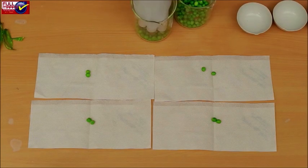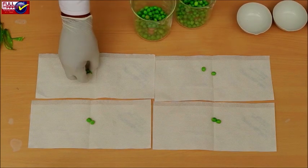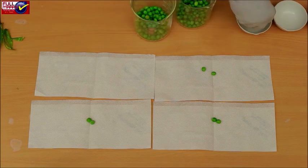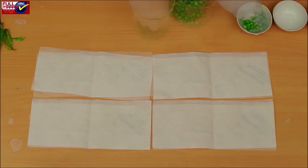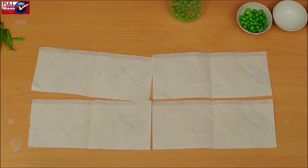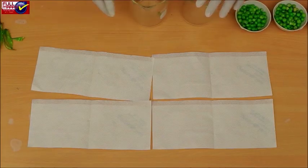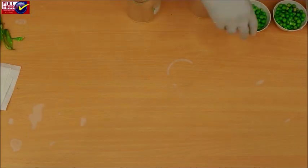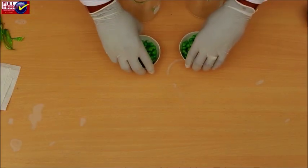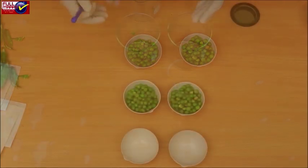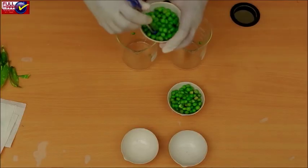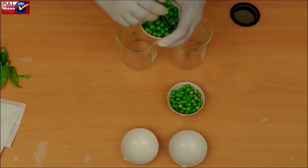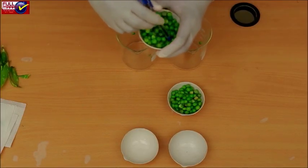Put 32 F1 progeny in one petri dish and the remaining 32 in another petri dish representing the F1 males and females. Stir the seeds of each petri dish with a pencil or pen about 10 times, taking care that no seeds fall off.